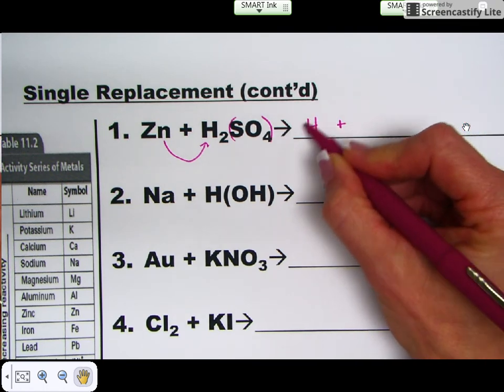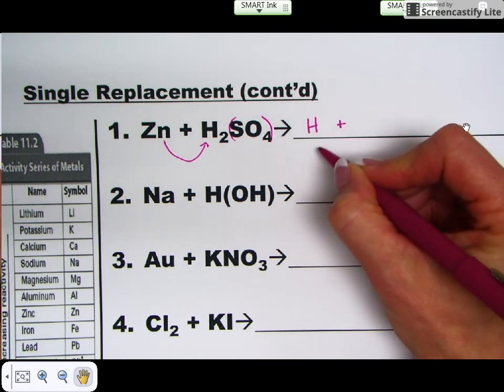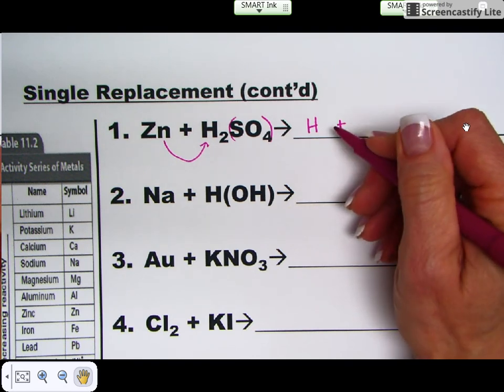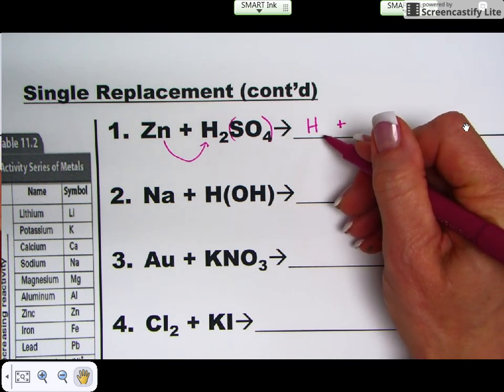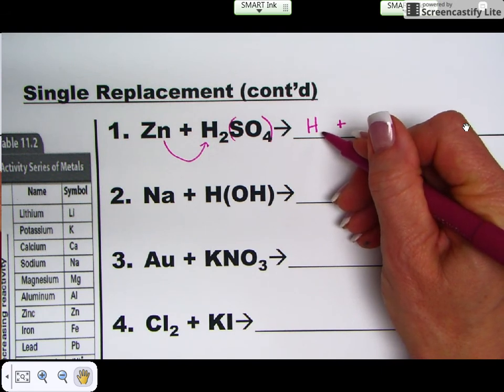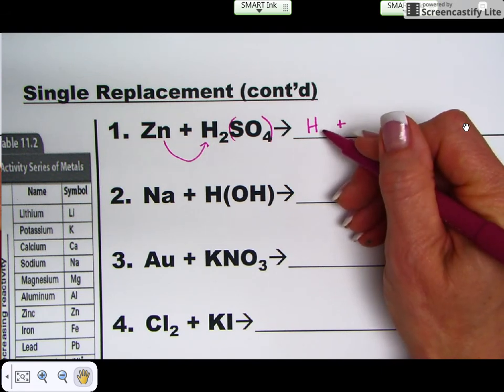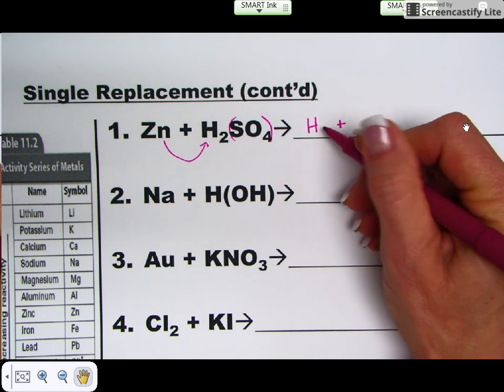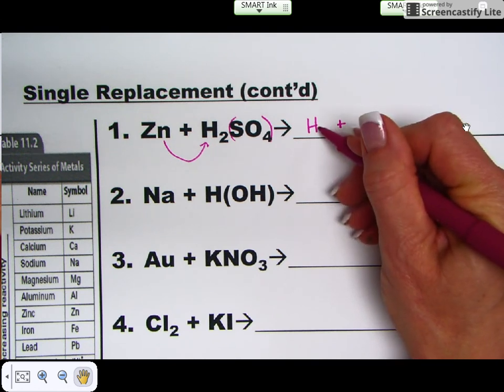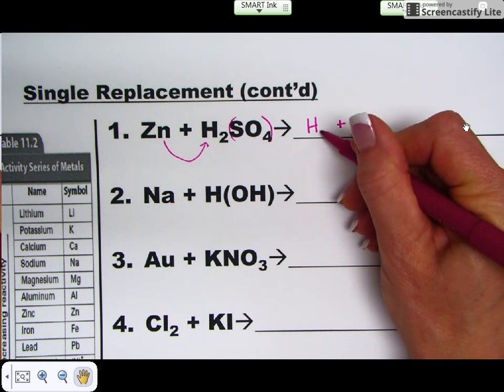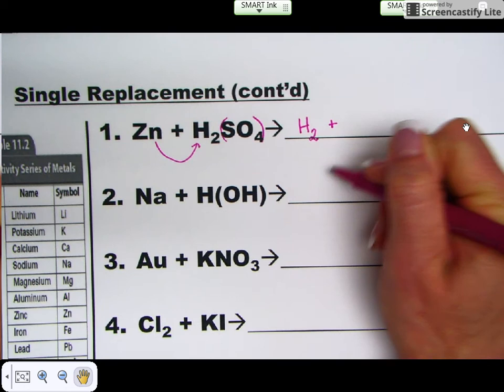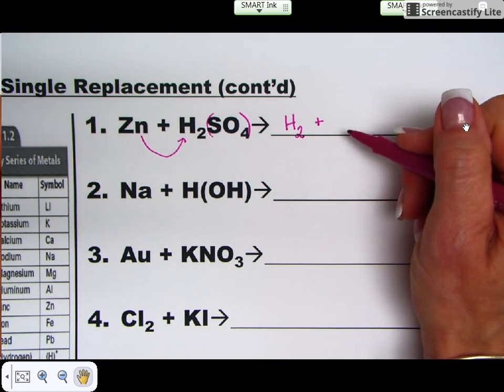Remember, there are certain elements that when they are by themselves in a reaction, they are the diatomic molecules. You always want to ask yourself, is the element that is alone a halogen hun? Hun is hydrogen, oxygen, or nitrogen. Is hydrogen a halogen hun? And the answer is yes. He is the H in hun. So we put a 2 with him. When he is alone, he is diatomic.